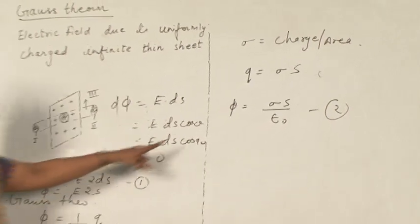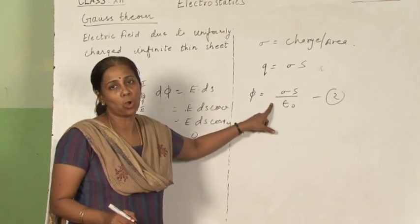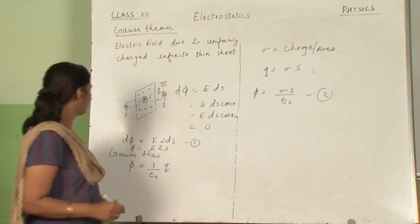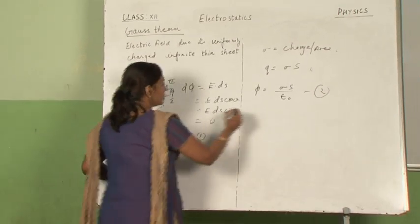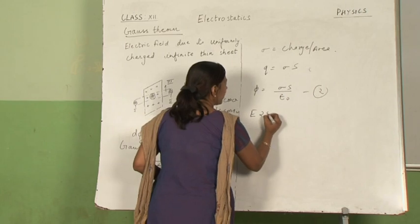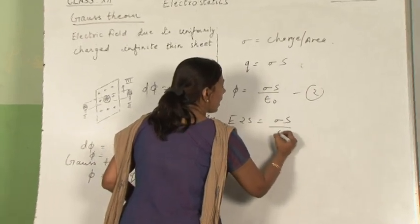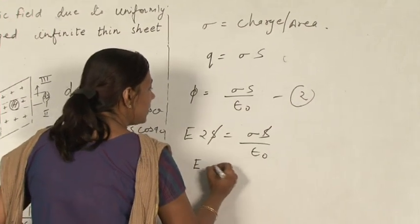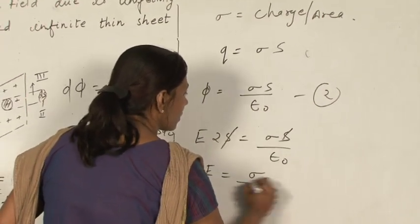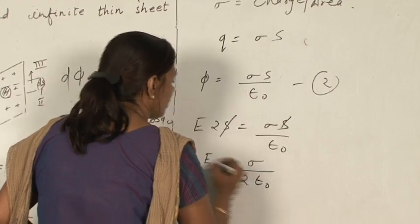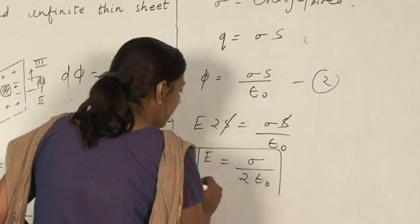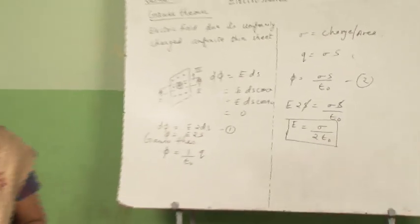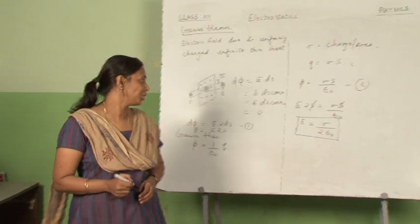From the definition we got equation 1, and from Gauss theorem we got equation 2. We equate the two to get E. So E·2S = σS/ε₀, the S cancels, giving E = σ/2ε₀. This is the electric field at any point due to a uniformly charged thin sheet.